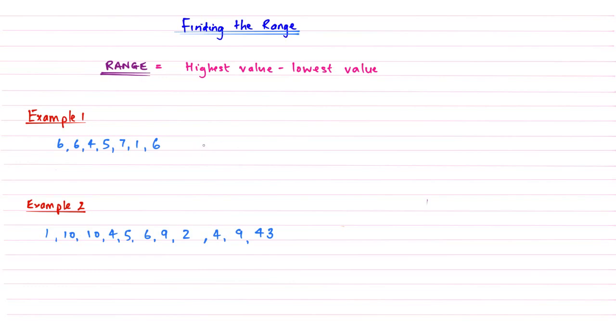If we look at example one, we need to work out what the range is. We circle the highest value, so we scan through and find the biggest value. In this case it's 7. Then from that we're going to take away the smallest, so we're going to look through and find what the smallest one is.